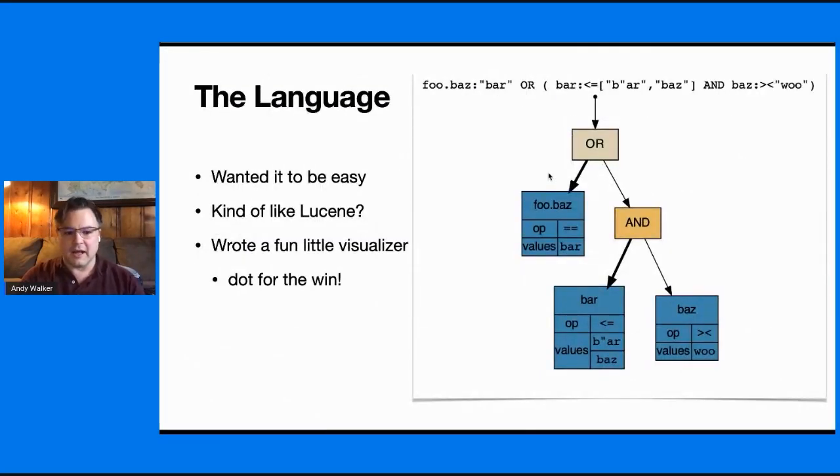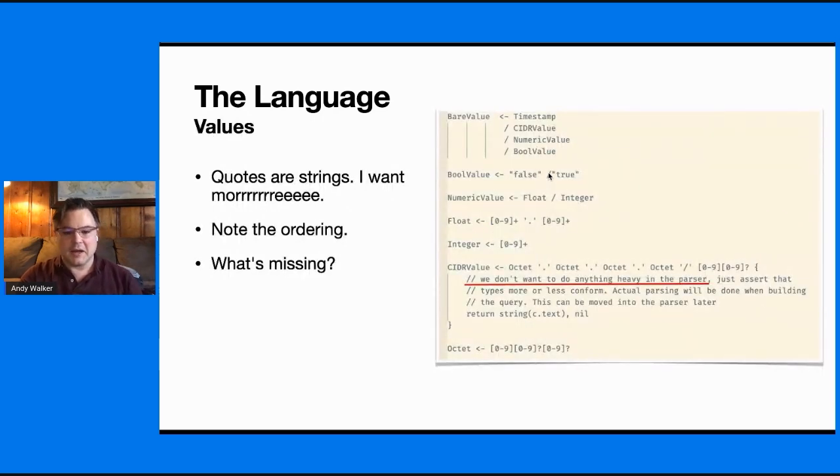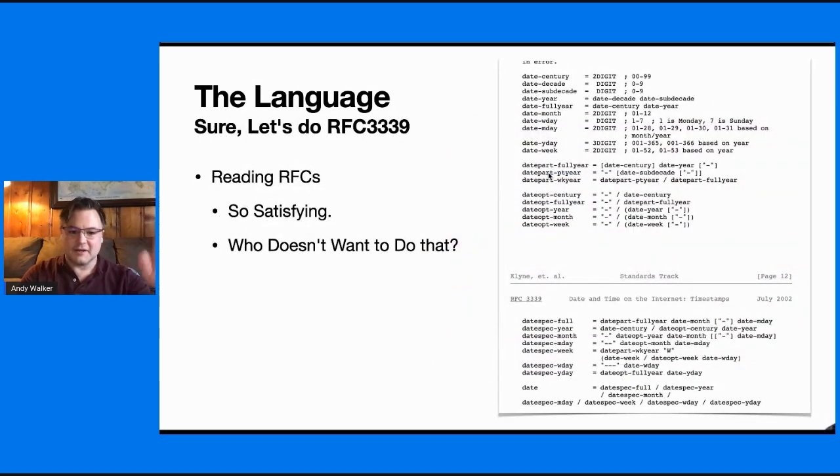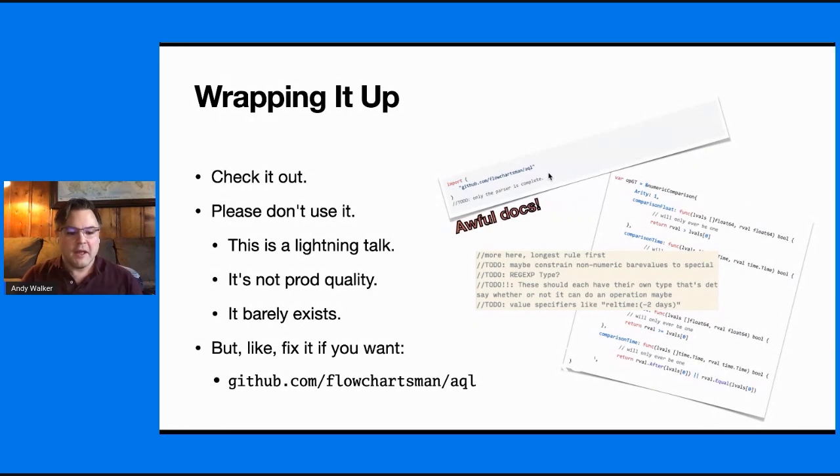It's very complicated. All right. So language, I wrote a little. I wanted it to be easy, kind of like Lucene or a little visualizer. You can see it right here. I wanted custom operations and they have to be delimited a certain way. So I did that. This is all I did. RFC 3339, who cares? GitHub.com/flowchartsman/fql. Don't use it yet, but you know, you can see it as a beginning of what to do. It has terrible documentation to do so far. It's very new. Thanks.